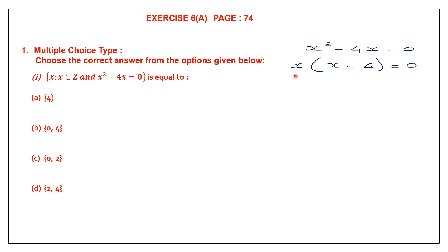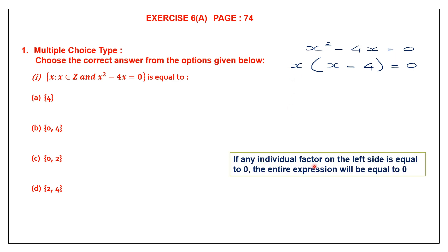I hope you understood this. If I simplify: X into X is X squared, minus sign is here, X into 4 is 4X — so the same thing is written here. Now, once you get factors like this — a binomial here and X here — remember this point: any individual factor on the left side, if that is equal to 0, the entire expression is equal to 0. So here we have two factors.